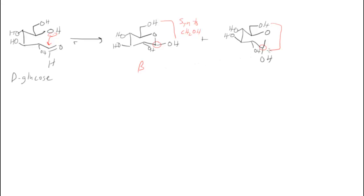In this case, the OH in the anomeric position is anti to the CH2OH. So we call that alpha.